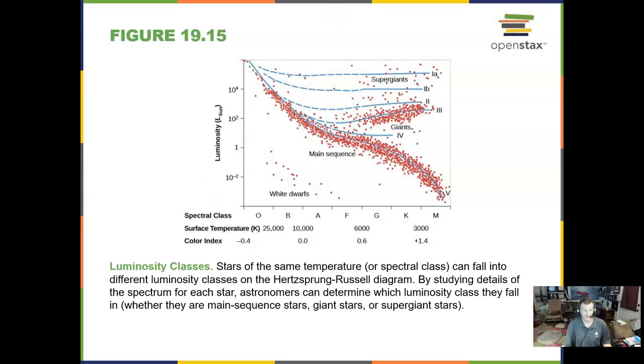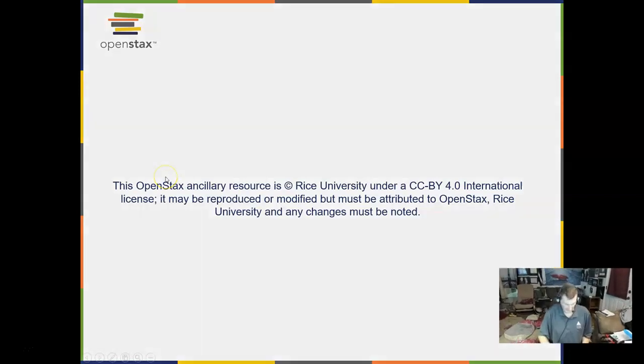Luminosity classes are for bigger stars, giants, and supergiants. And that's going to do it for chapter 19. Thank you for this short lecture.